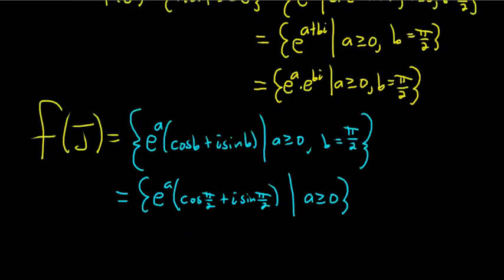So cosine of pi over 2 is 0, sine of pi over 2 is 1. So this is 0, this is 1. So we end up with this set: e to the a times i, such that a is greater than or equal to 0. So that's the set.